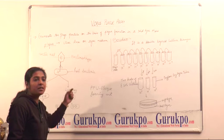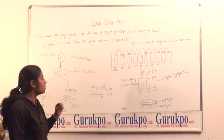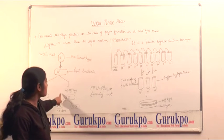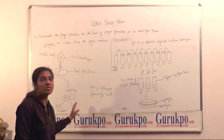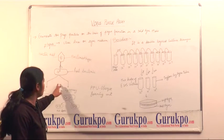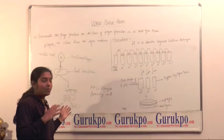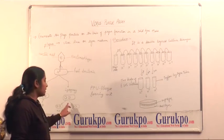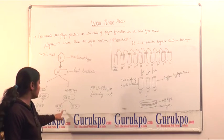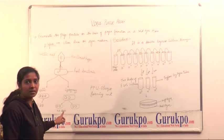Plaque means it is a clear zone around the agar media. Second is lysogenic cycle. In lysogenic cycle, bacteriophage nucleic acid integrates with bacterial nucleic acid. And in this case, it does not lyse the bacterial cell.